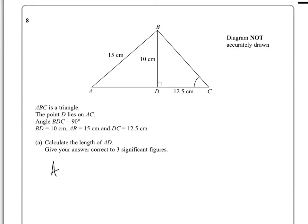So AD, the length we're trying to find, squared plus 10 squared equals 15 squared. So that means that AD squared will be equal to 15 squared minus 10 squared.